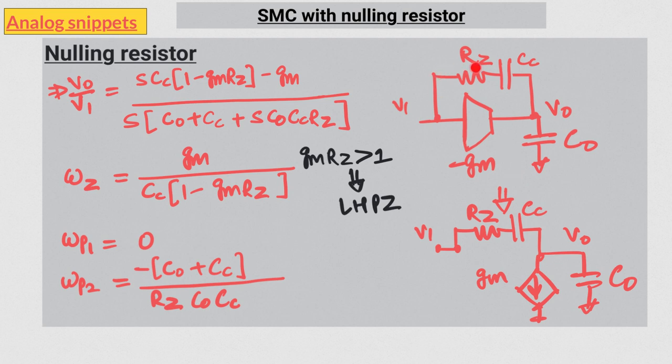But if we add a resistor in series, this doesn't happen anymore. After adding this RZ, the maximum conductance of this feed forward path is limited by this RZ.